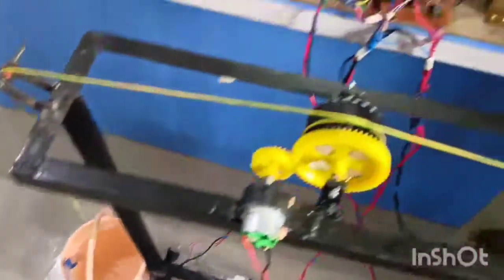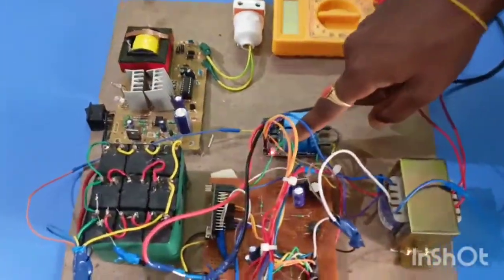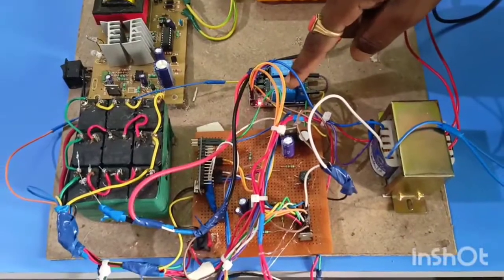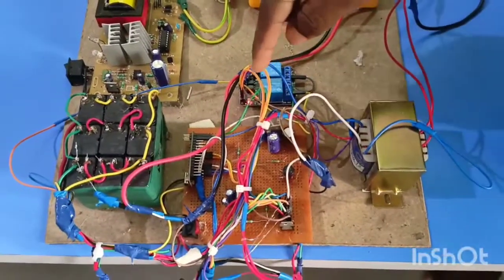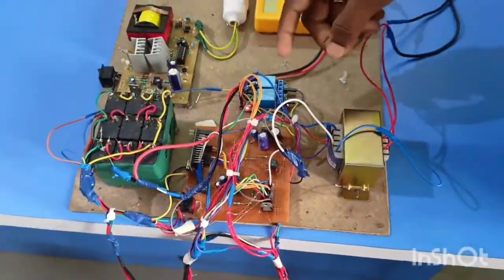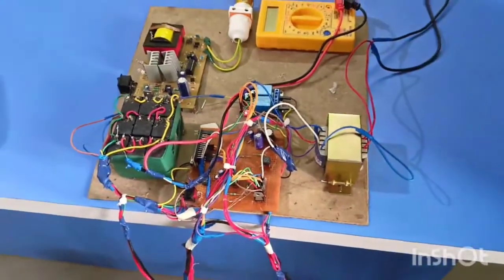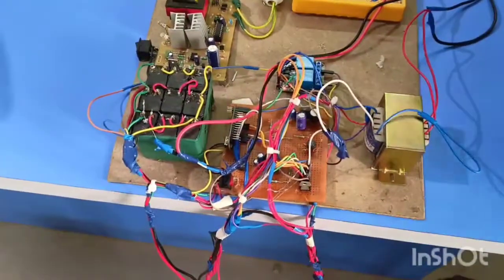It is controlled by the relay. The relay turned on motor one. The turning on and turning off is based on the values of ultrasonic sensor which is being read by the Arduino Nano.